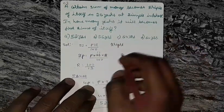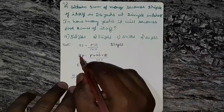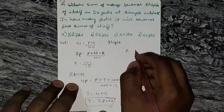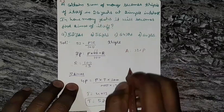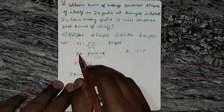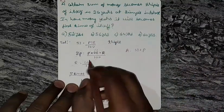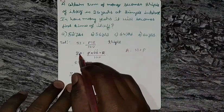Triple means interest will be double, because amount is equal to simple interest plus principal. So if amount is triple, interest must be double. In 26 years, interest is doubled as principal amount.